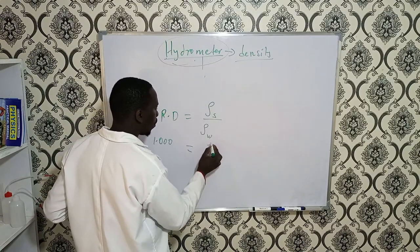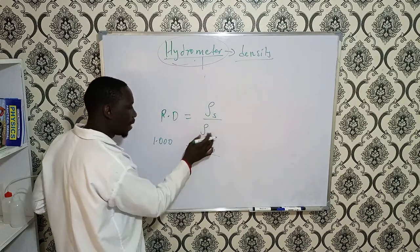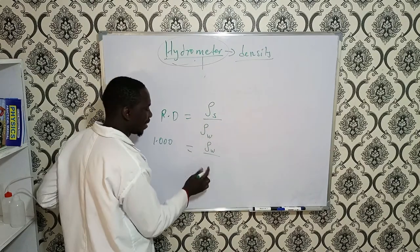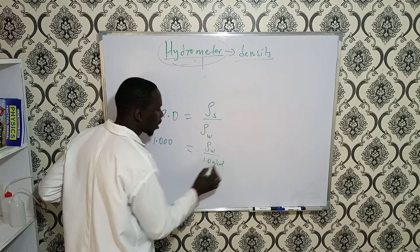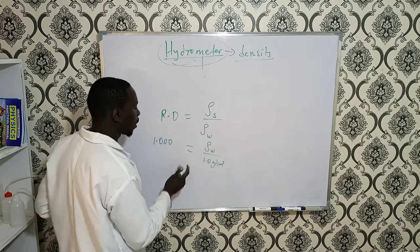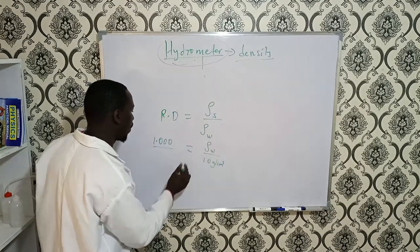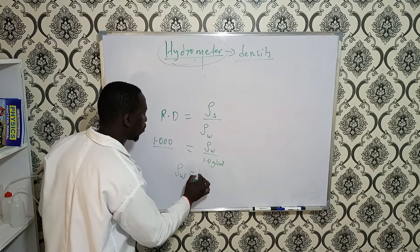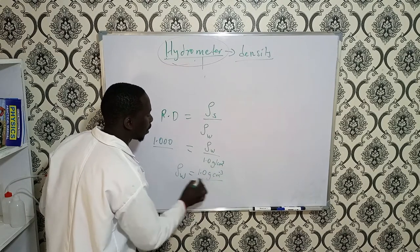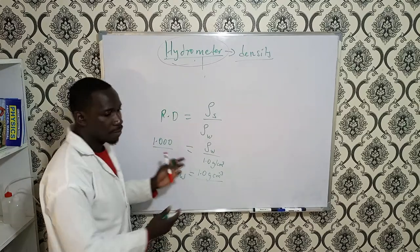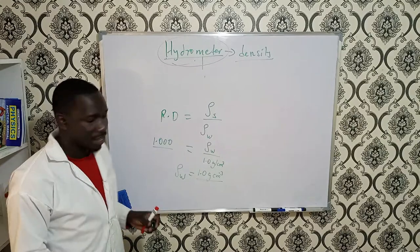The density of water is 1.0 grams per cubic centimeter. Since relative density is a ratio and has no unit, cross-multiplying confirms the density of water is 1.0 grams per cubic centimeter. That is how you use the formula. Now let's find the relative density of another substance.